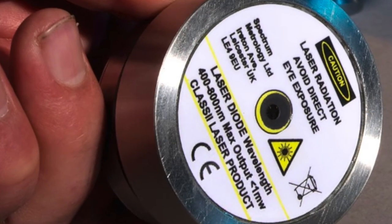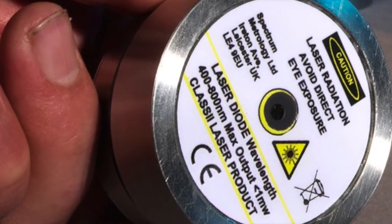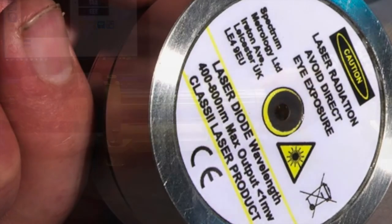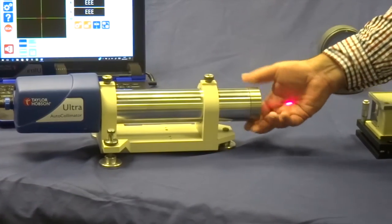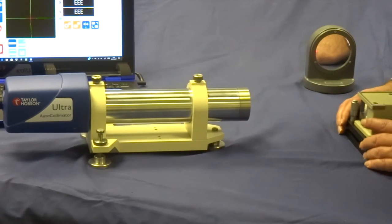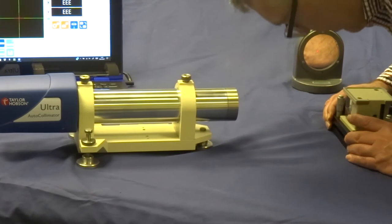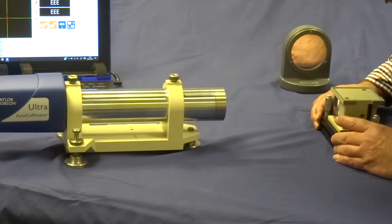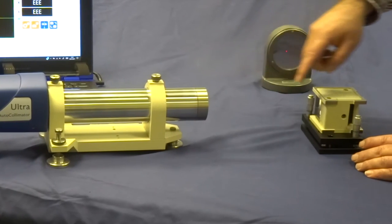Here, the ultra-autocollimator sighting aid becomes very useful. Assuming we have measured the first slideway, line one, next we use the sighting aid to align the mirror on line two. We need to see that we have a signal along the entire slideway number two.